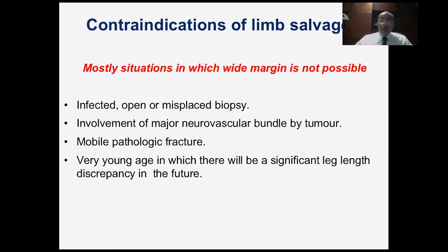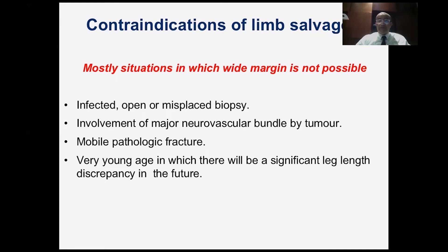When do we not do a limb salvage and instead do an amputation? Mostly in situations where we cannot achieve a wide margin of resection — like if we have an infected, open, or misplaced biopsy; when the neurovascular bundle is involved by the tumor; when we have a mobile pathological fracture with hematoma dispersed around the surrounding muscles; or in very young individuals in which even if we can do a safe limb salvage, the reconstruction cannot cope with the leg length discrepancy in the future.